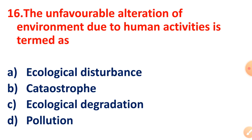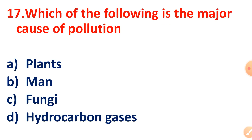Question 16: The unfavorable alteration of the environment due to human activities is termed as what? It is called Pollution. Question 17: Which of the following is the major cause of pollution? The correct answer is Hydrocarbon gases.